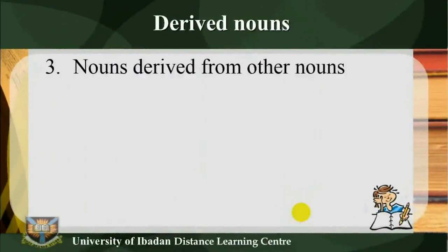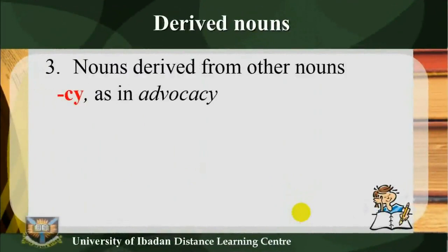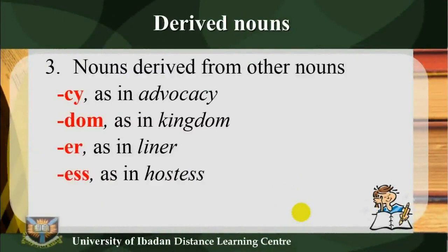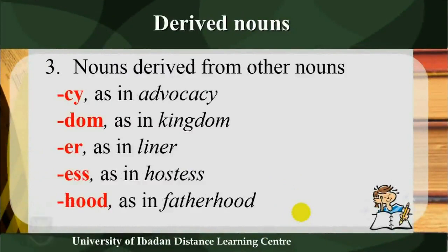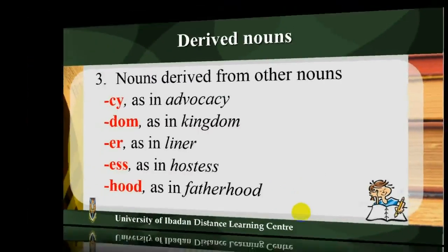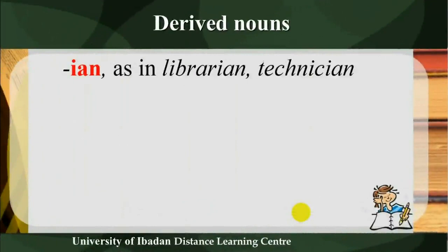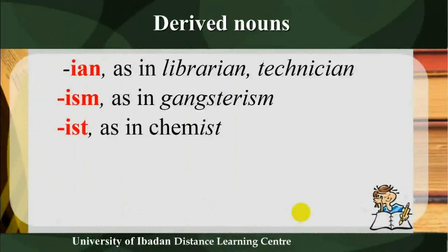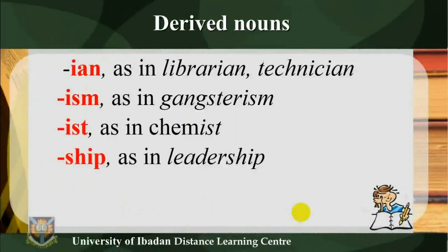3) Nouns derived from other nouns. Suffixes include: -cy (as in 'advocacy'), -dom (as in 'kingdom'), -er (as in 'liner'), -ess (as in 'hostess'), -hood (as in 'fatherhood'), -ian (as in 'librarian', 'technician'), -ism (as in 'gangsterism'), -ist (as in 'chemist'), -ship (as in 'leadership'), -ster (as in 'gangster').